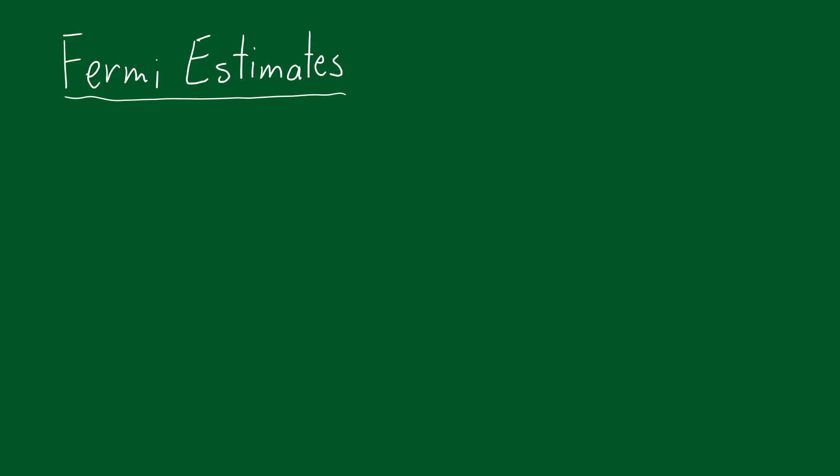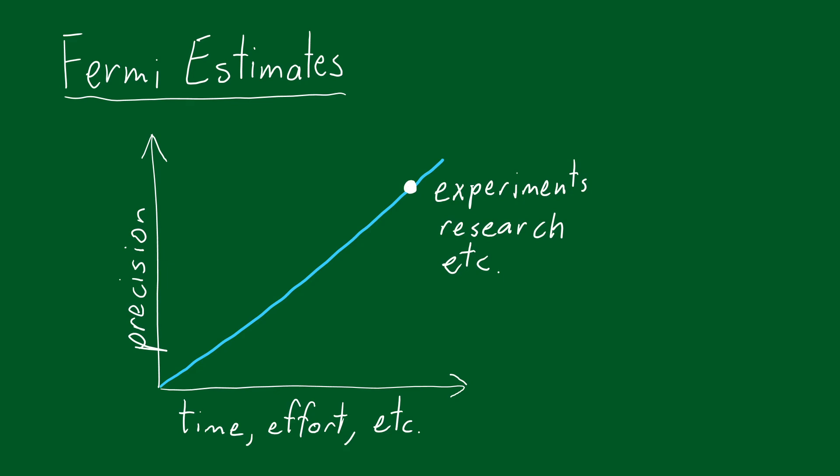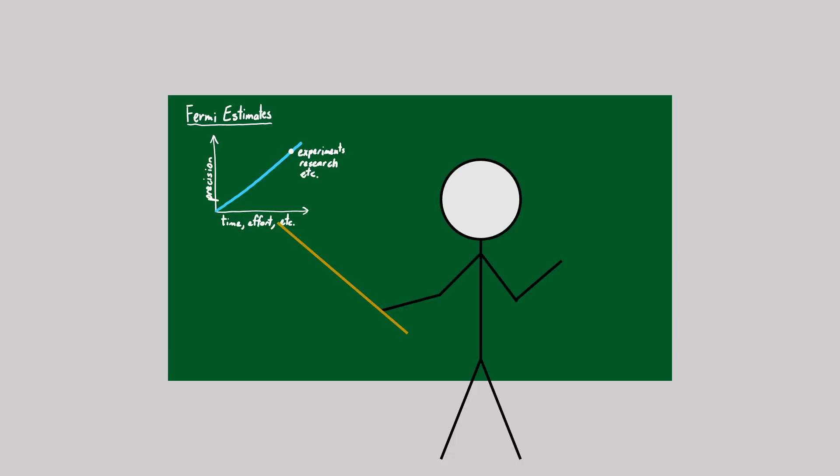Fermi estimates are a problem-solving method like none other. Most strategies for finding numerical answers, like experiments or precise research, do their best to achieve the highest level of precision possible, even if it takes extra thought, time, or effort.